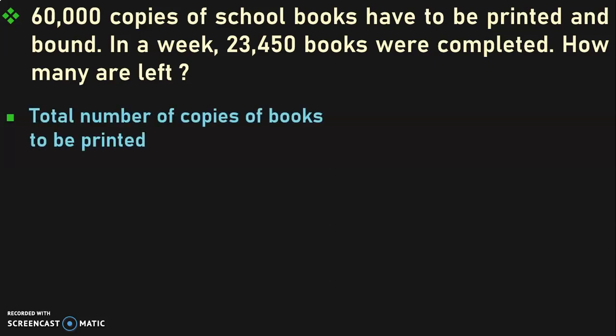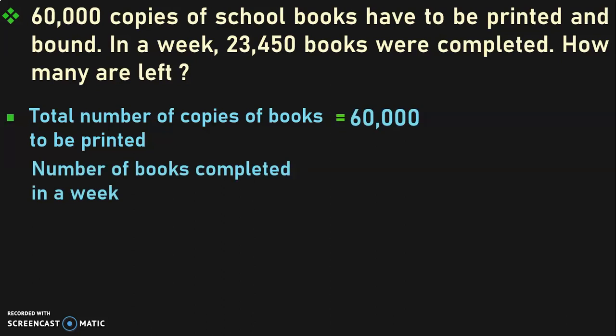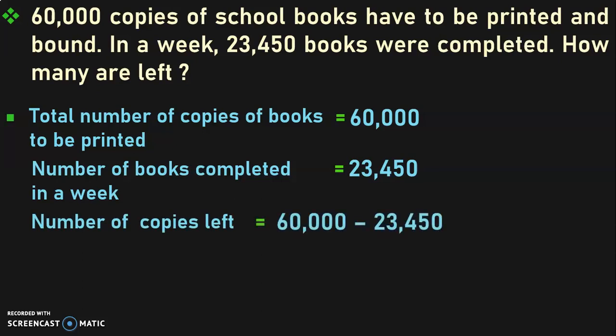Here, what are the details given? Total number of copies of books to be printed is equal to 60,000. Number of books completed in a week is equal to 23,450. So, the number of copies left is equal to total number of copies to be printed minus number of books completed in a week: 60,000 minus 23,450.